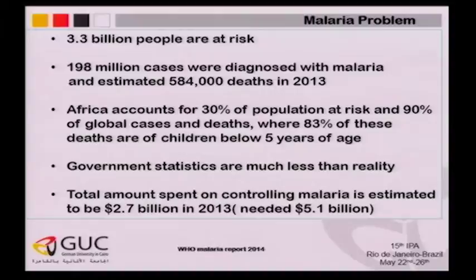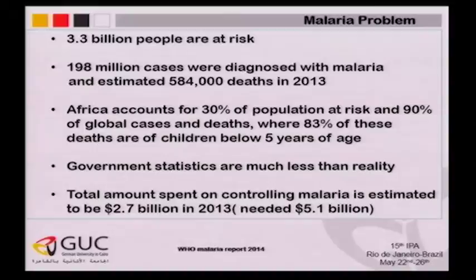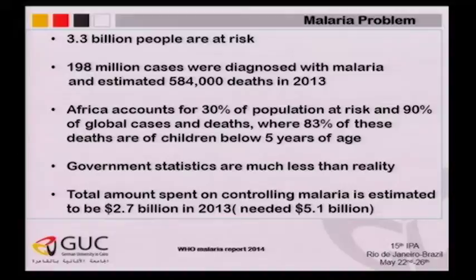Africa accounts for about 90% of global cases and deaths, and deaths in children under five years represent about 83% of that. According to WHO, government statistics are much less than reality because death cases occur in small villages or rural areas and cannot be exactly determined. The total amount spent on controlling malaria is estimated at 2.7 billion in 2013, while WHO needed 5.1 billion to eradicate malaria.